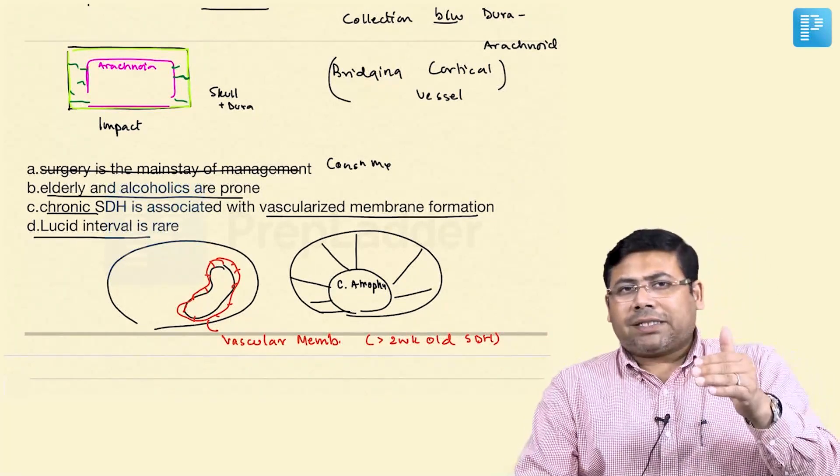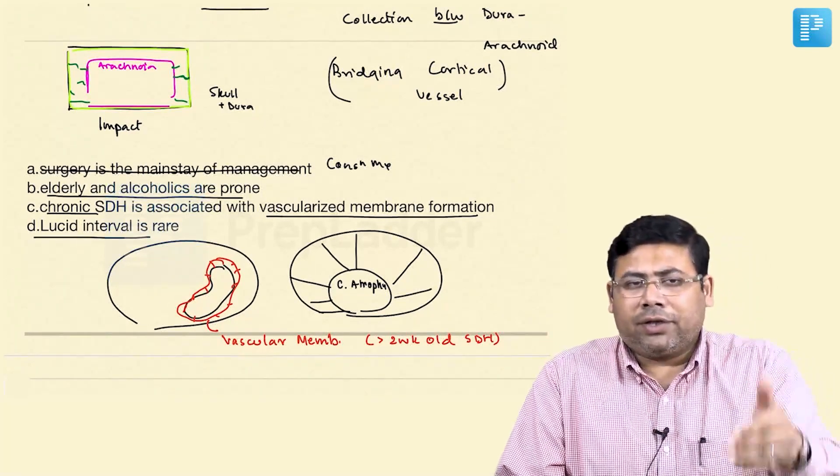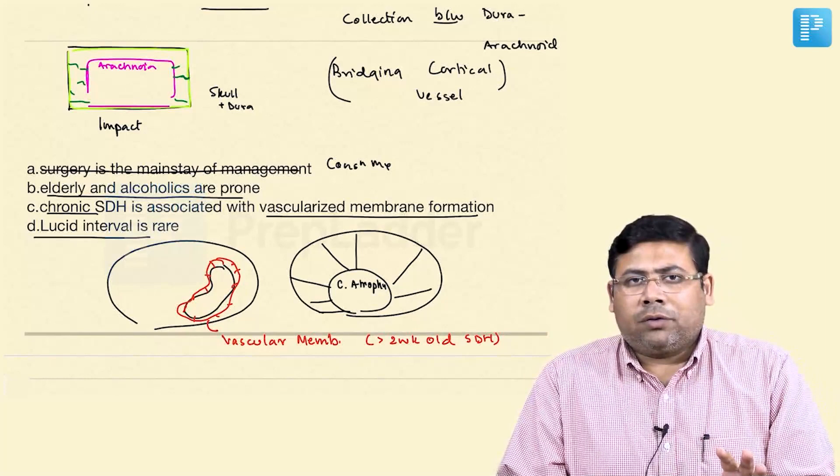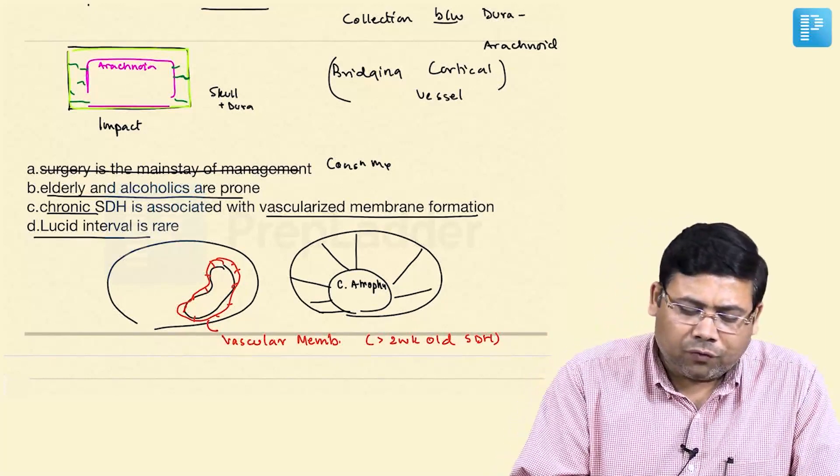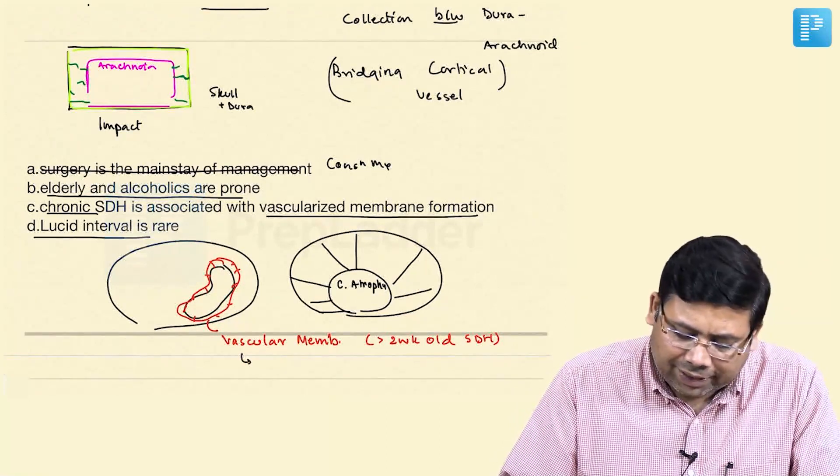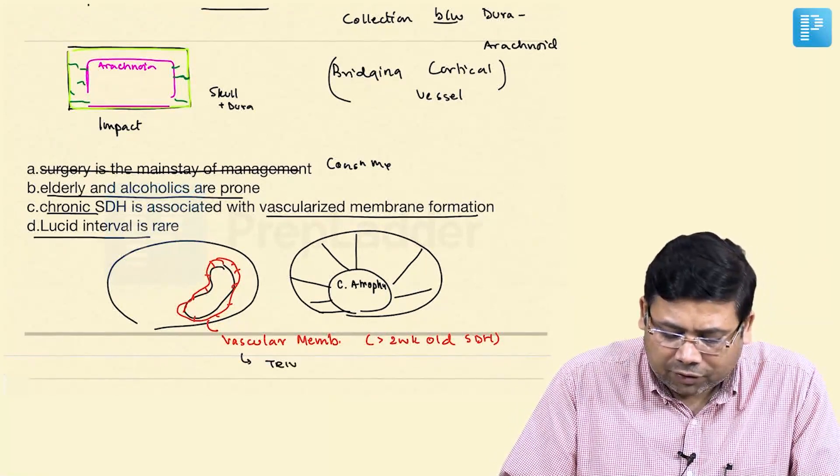Now, do you know someone who has actually suffered an injury, suppose alcoholics or elderlies, they are prone to injury, they are prone to fall. So, if there is a slight injury or you can say a trivial trauma,